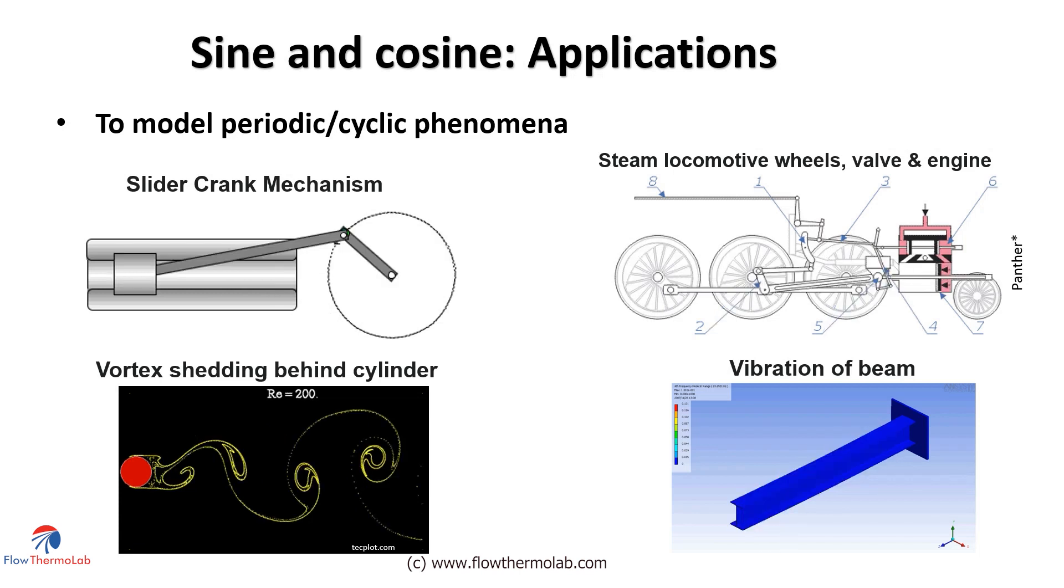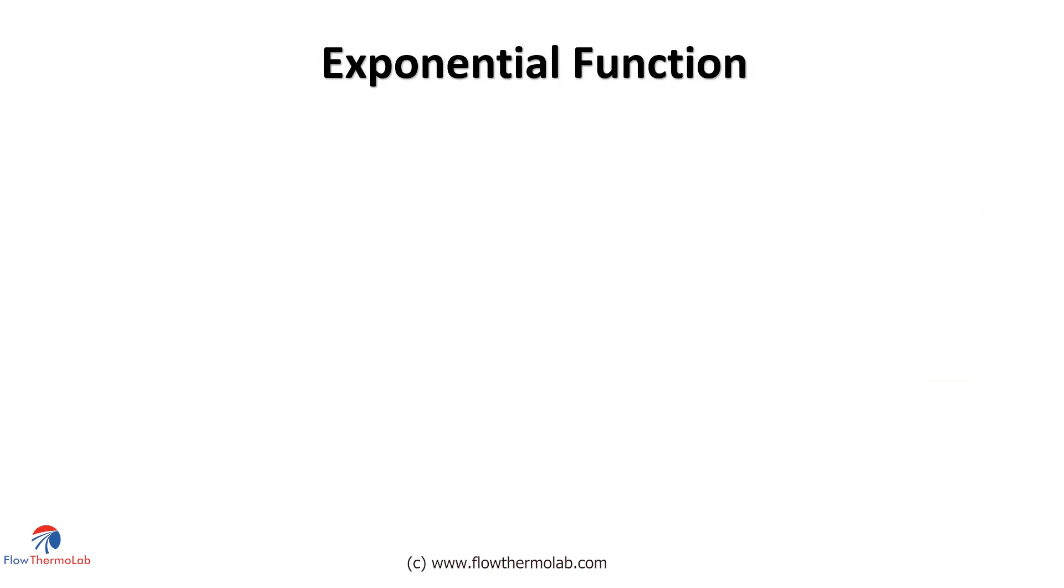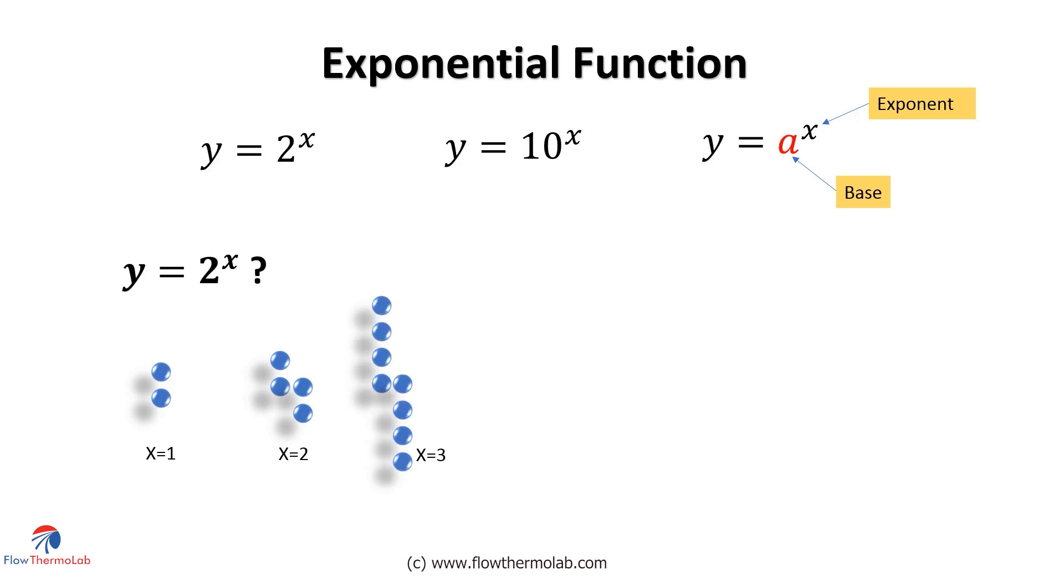The next important function is the exponential function. It is written as y equal to 2 power x, or y equal to 10 power x, or in general y equal to a power x, where a is called the base and x is called the exponent. So what do you mean by y equal to 2 power x? It means for each variation in x, the number will be doubled. For x equal to 1, it will be 2. For x equal to 2, it becomes 4. For x equal to 3, it becomes 8, then 16, and so on.